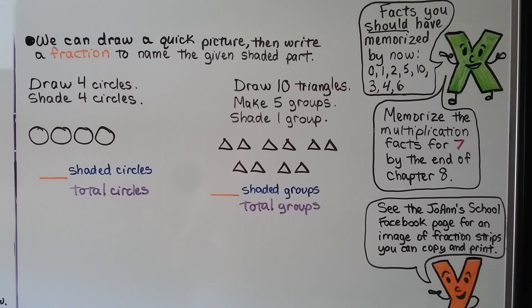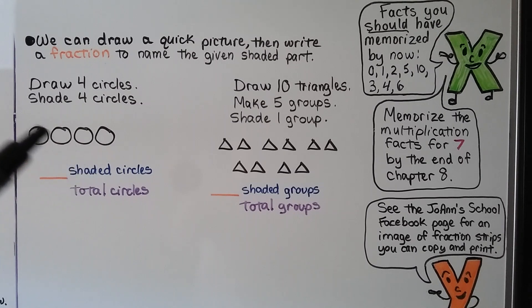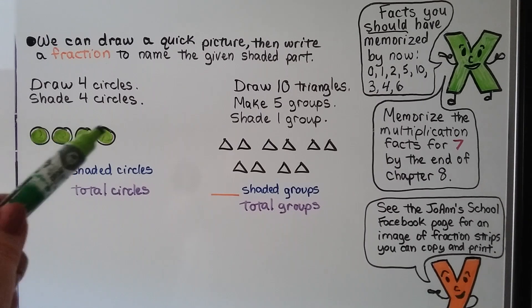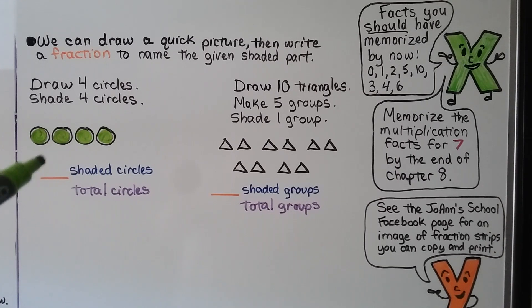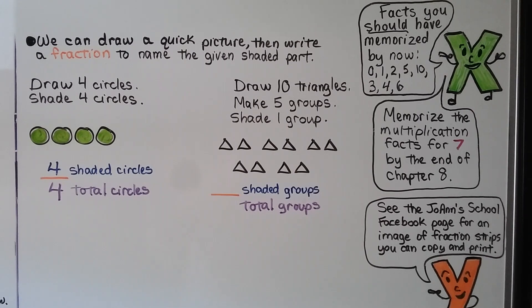We can draw a quick picture then write a fraction to name the given shaded part. It tells us to draw four circles, so I did. Now it tells us to shade four circles, so I shaded all four. We write the fraction: four shaded circles over four total circles. Four out of four circles are shaded, which means we have one whole group that are shaded — they're all shaded.